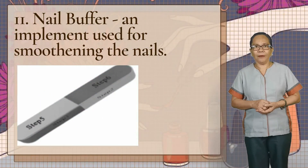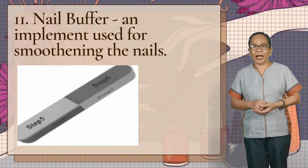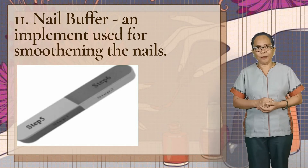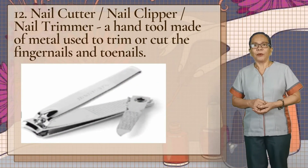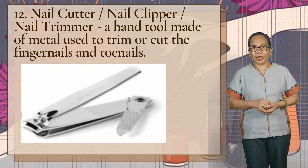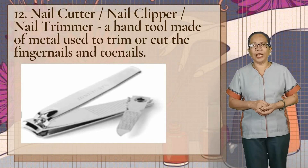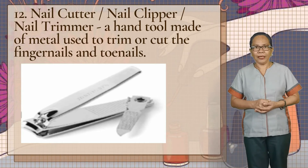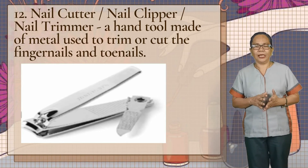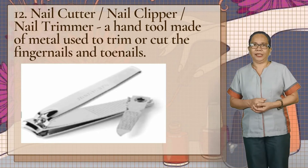Next we have the nail buffer, an implement used for smoothening the nails — ito ay parang goma, hindi po siya eraser. Next we have the nail cutter, or the nail clipper, or the nail trimmer — kahit alin dyan, pare-parehas lang po yan. Ang gamit ay pamputol ng fingernails and then your toe nails.